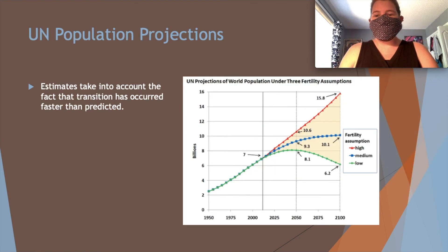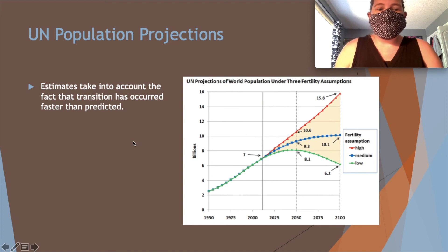In terms of human population projections, estimates take into account that the demographic transition has occurred faster than predicted — we're beyond what we expected. Please make sure you watch the video about Malthusian views if you haven't already, as it explains things very well. That's it for this lecture — see you in the next one.